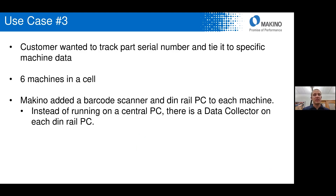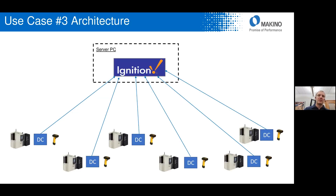The last use case was a customer that wanted to track their part serial number and relate that to specific machine data. They had six Pro5 machines in one cell and requested Makino add a barcode scanner to collect the part serial number. Instead of running on a central PC, we added a DIN rail PC to each machine where we could tie in the barcode scanner with the Data Collector. The Data Collector and barcode scanner run inside the machine control on that DIN rail PC, collect the data, and publish it via MQTT to a central server PC running Ignition. This allowed the customer to build their own database and track the serial number of the part with all of their feeds, speeds, overrides, and alarm information.